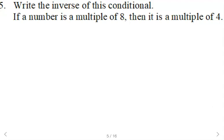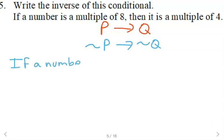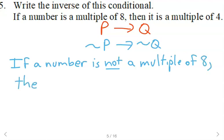Write the inverse. Okay, for the conditional, it's if P then Q. The inverse will negate both of those, so if not P then not Q. So we can say if a number is not a multiple of eight, then it is not a multiple of four. We're not making any judgment as far as whether or not it's a true statement. We are just writing the inverse of the conditional.